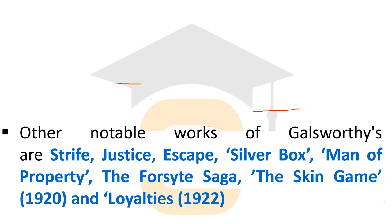Other notable works of John Galsworthy include Man of Property, The Forsyte Saga, The Skin Game published in 1920, and Loyalty published in 1922. His important works also include Strife, Justice, Escape, Silverworks, and others. These are all world-famous works that Galsworthy contributed to the history of English literature in the fields of drama and the novel.